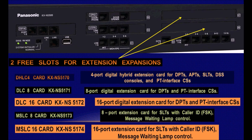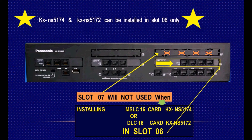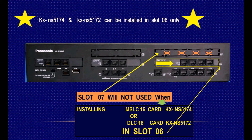FSK caller ID type is for telephones only, not for external lines — please notice this difference and be careful. When using MSLC16 or DLC16, these cards can only be installed in slot 06. In this case, slot 07 cannot be used at all. As indicated, the main unit comes with 16 single line telephones. Another 16 extensions can be added — digital phones, single line phones, or both.